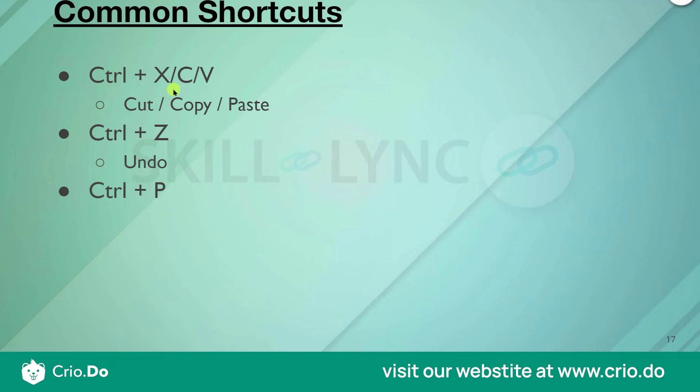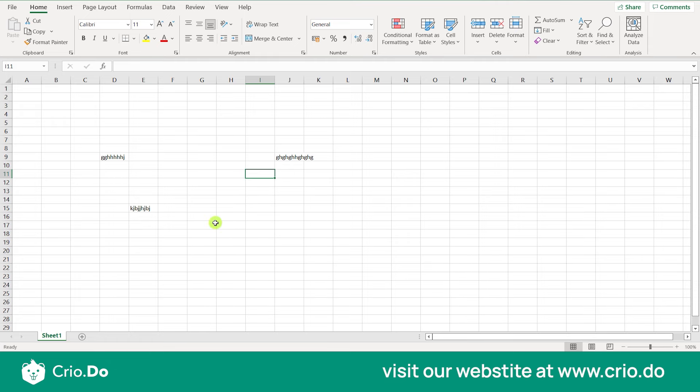Ctrl+Z is used for Undo — if you want to go back to your previous work, you can use Undo. Ctrl+P is used to open the Print dialog. Whenever you want to print your document, you can directly go to the Print dialog page using Ctrl+P.